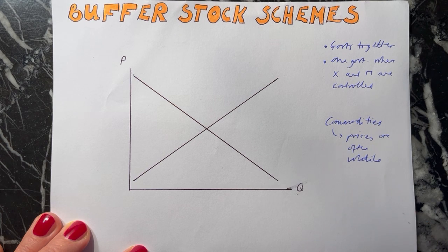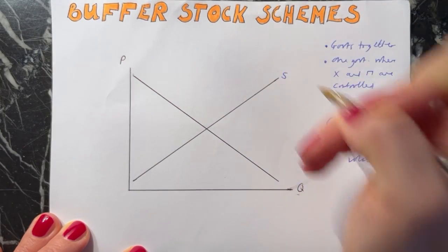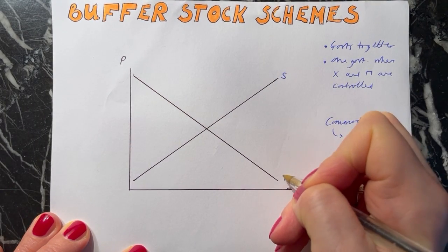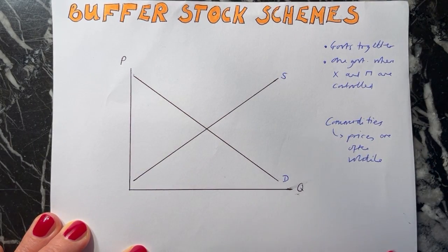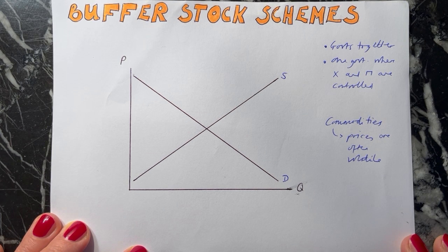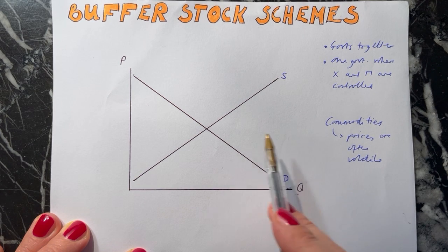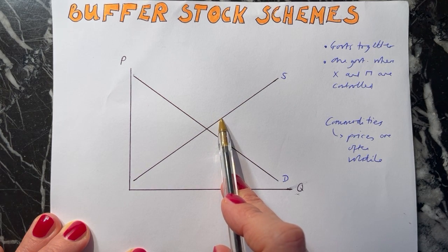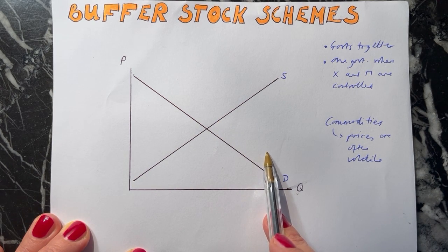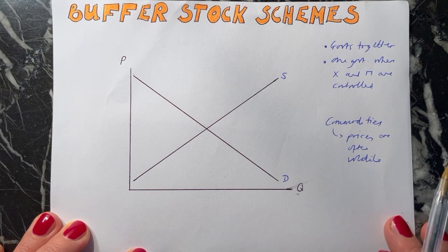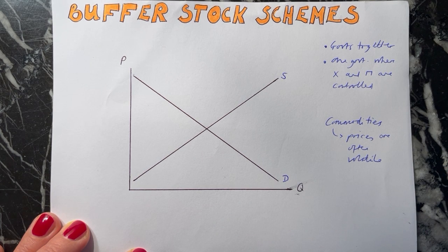The world price goes up and down according to supply and demand. Demand and supply determine the price of the commodity. So if there's an increase in demand the price would go up; if there was an increase in supply then the price would fall. The price can be very volatile, and the point of the buffer stock scheme is to reduce this volatility of prices.